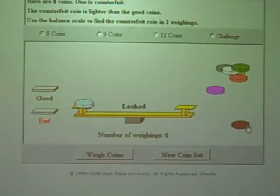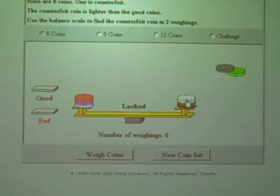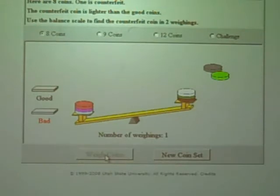So if we would weigh just 2 at a time, we wouldn't probably find it unless we were extremely fortunate. So let's try another strategy, and let's weigh 3 at a time, and then we have 2 left outside here that we're not going to weigh. Now let's see if these balance. I'm going to click on weigh coins. Oh, it looks like we see that these over here are lighter.